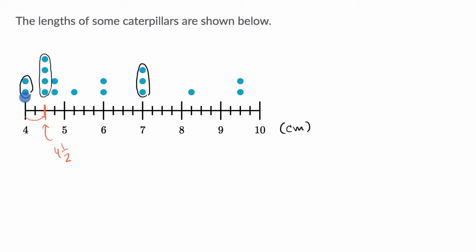Each dot represents a caterpillar measurement, so counting them all: one, two, three, four, five, six, seven, eight, nine, ten, eleven, twelve, thirteen, fourteen, fifteen, sixteen, seventeen. So we have a total of 17 caterpillars.